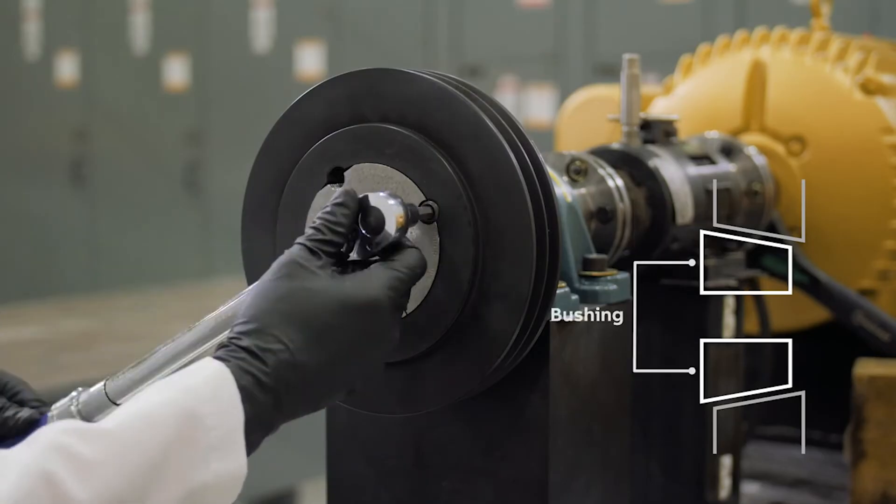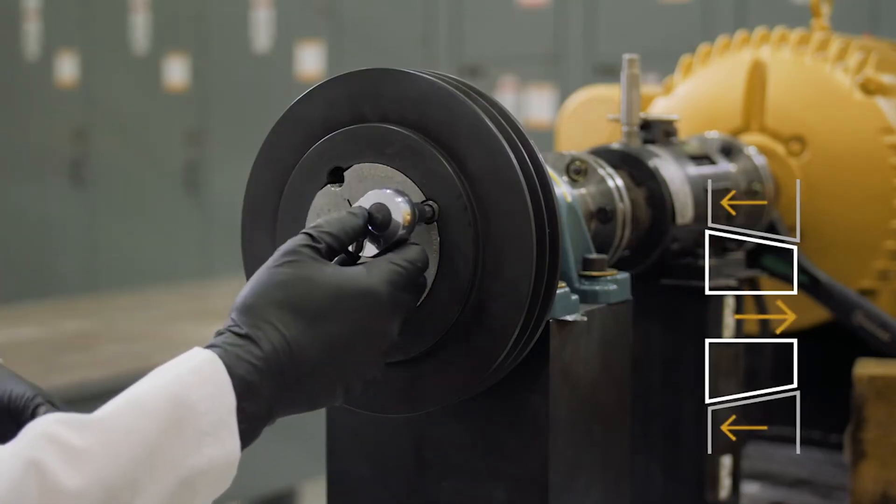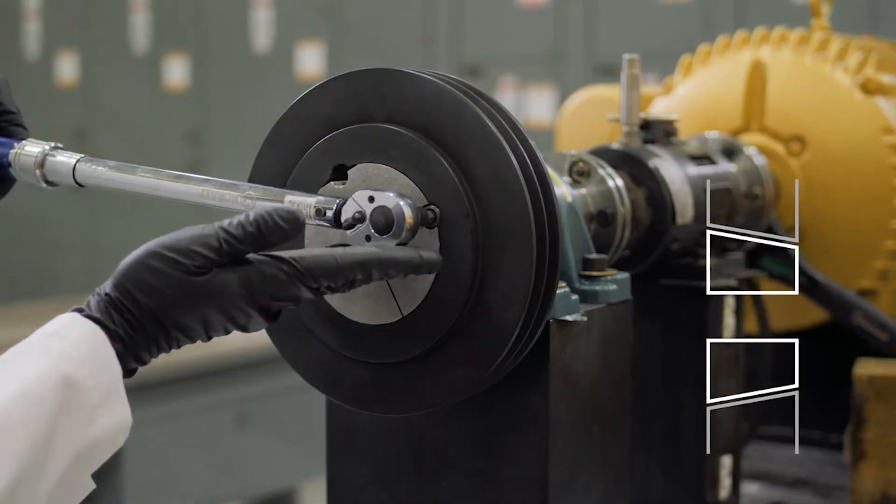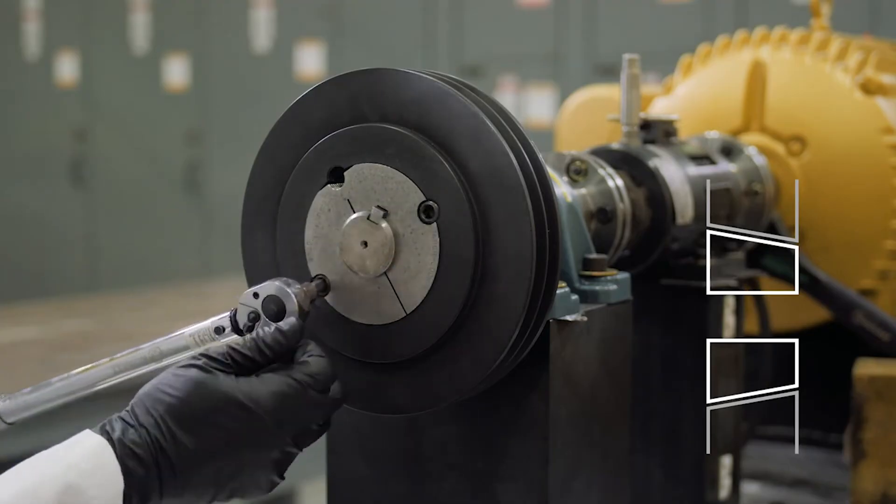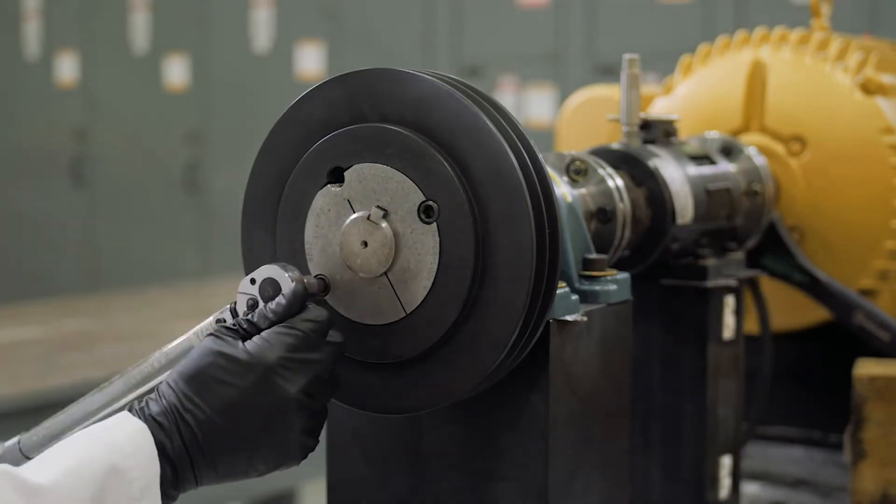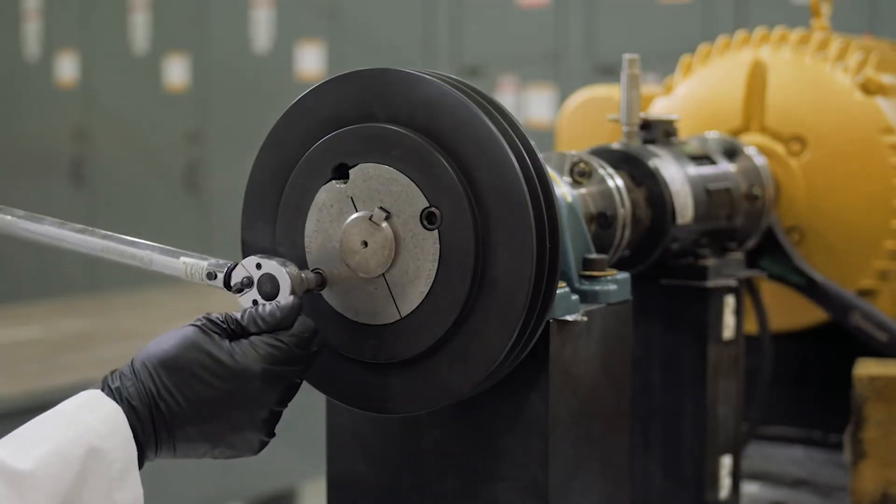During tightening of the set screws, the two tapered surfaces are drawn together, wedging the bushing into place between the shaft and the hub. This creates a concentric shaft attachment capable of transmitting torque.